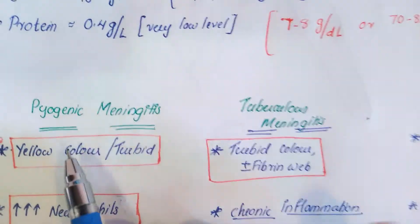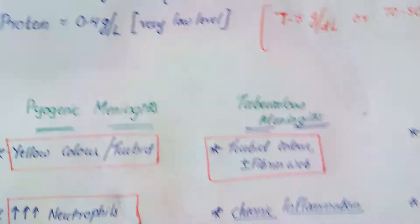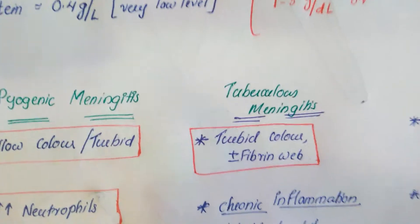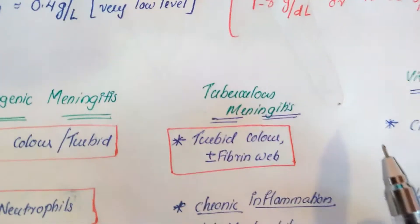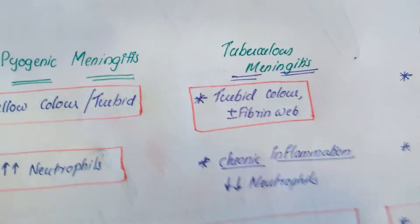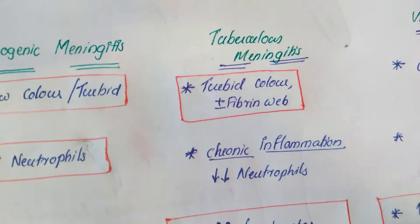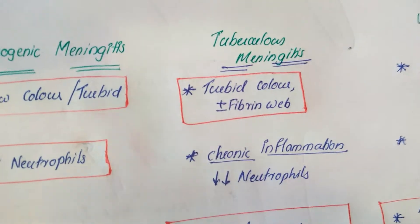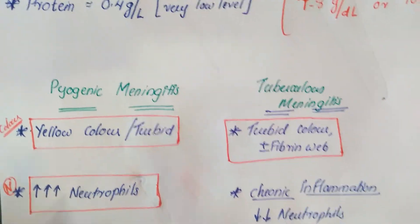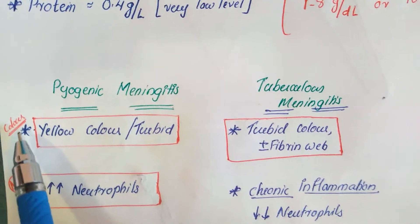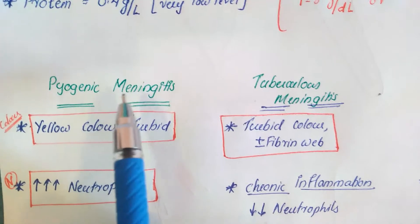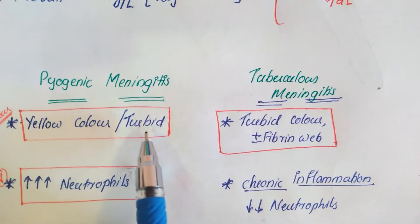Now we can differentiate the three types of meningitis. Pyogenic means pus-forming meningitis — pus-forming bacteria such as E. coli, Streptococcus, and Neisseria cause this meningitis. Tuberculosis meningitis is caused by Mycobacterium tuberculosis, and viral meningitis is caused by a virus. During lumbar puncture between L4 and L5, for pyogenic meningitis the CSF color is yellow or turbid.